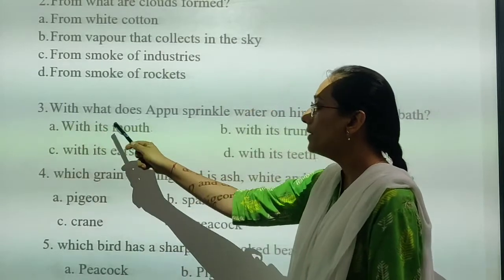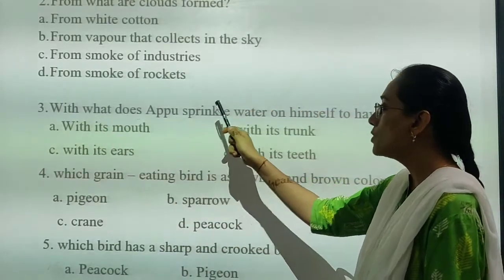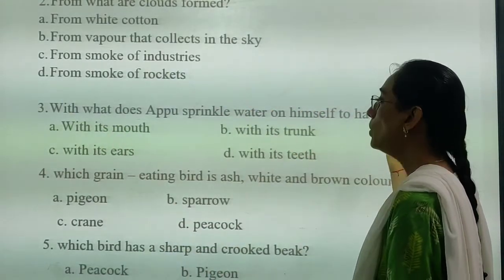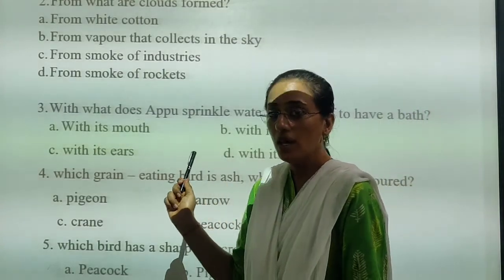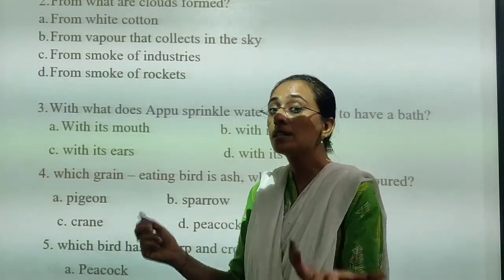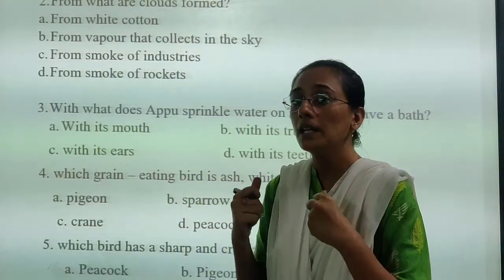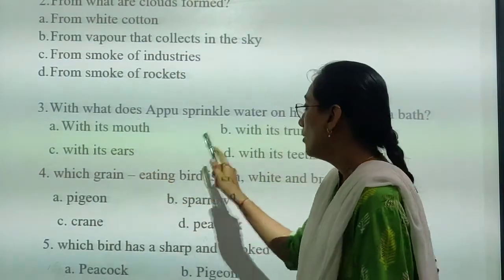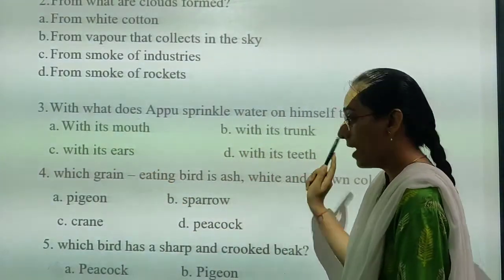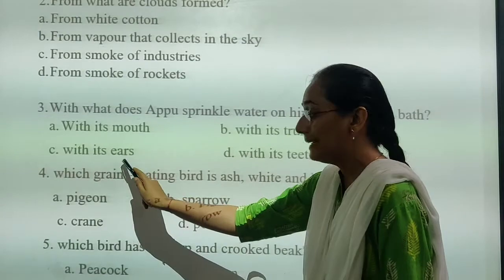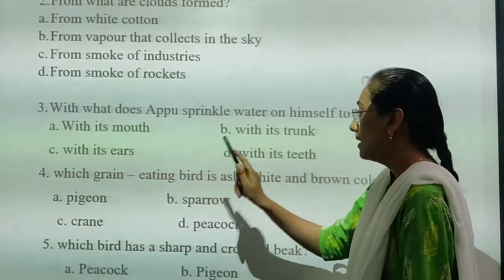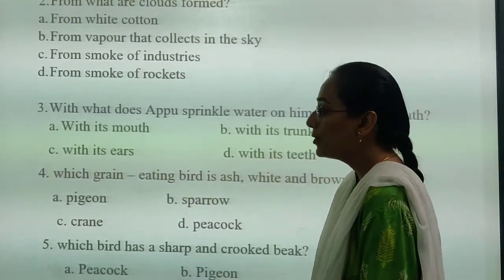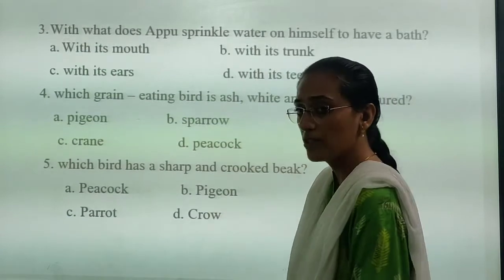Third: with what does an animal sprinkle water on himself to have a bath? The options are: with its mouth, with its trunk, with its ears, or with its teeth. You have to find the correct answer.